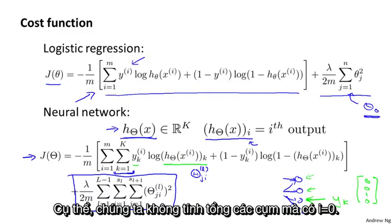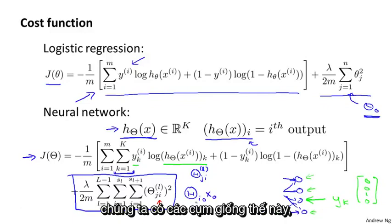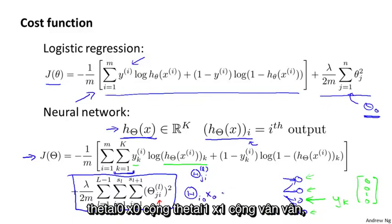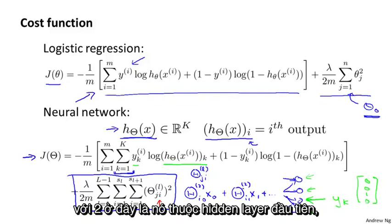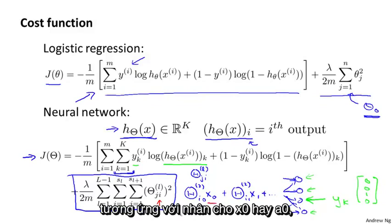Concretely, we don't sum over the terms corresponding to where i is equal to zero. So that is because when we're computing the activation of a neuron, we have terms like these, theta_{i,0} plus theta_{i,1} x_1 plus and so on, where this is the first hidden layer. And so the values of theta zero there that corresponds to these values, this is something that multiplies into an x_0 or an a_0. And so this is kind of like a bias unit.